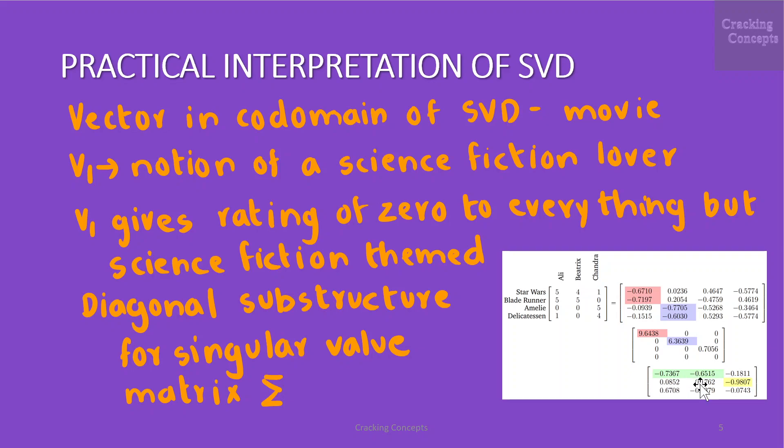This suggests that V_1 reflects the notion of a science fiction lover. Similarly, U_2 seems to capture a French art house film theme and V_2 indicates that Chandra is close to an idealized lover of such movies.